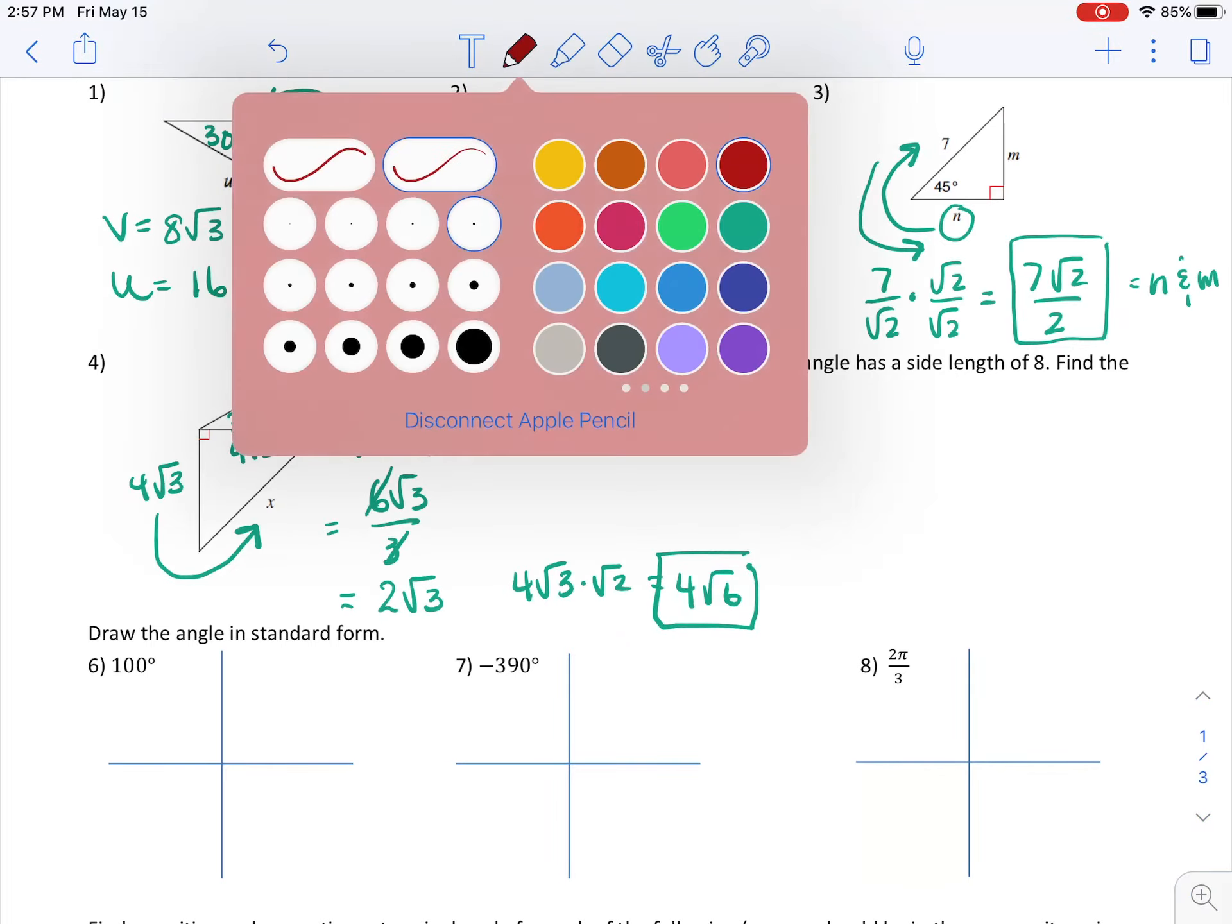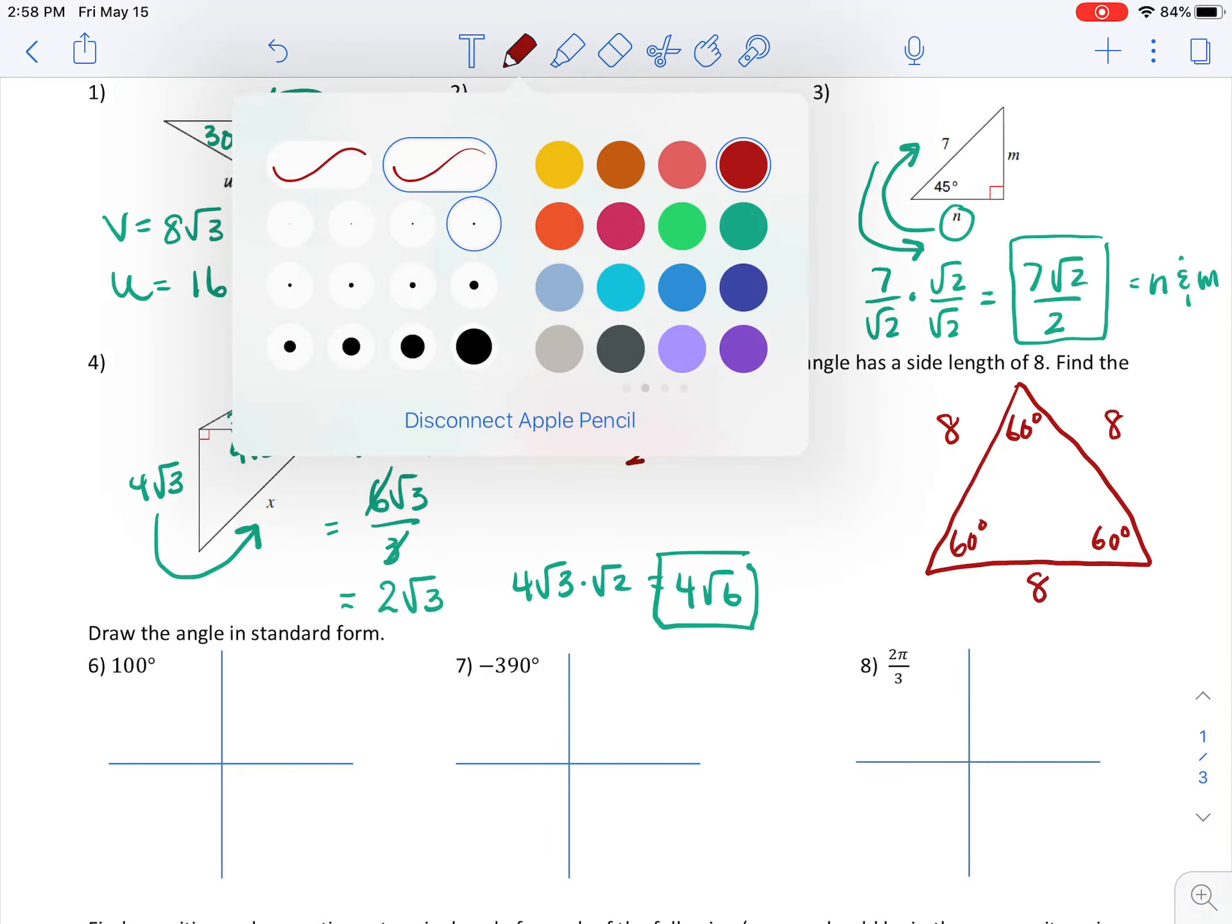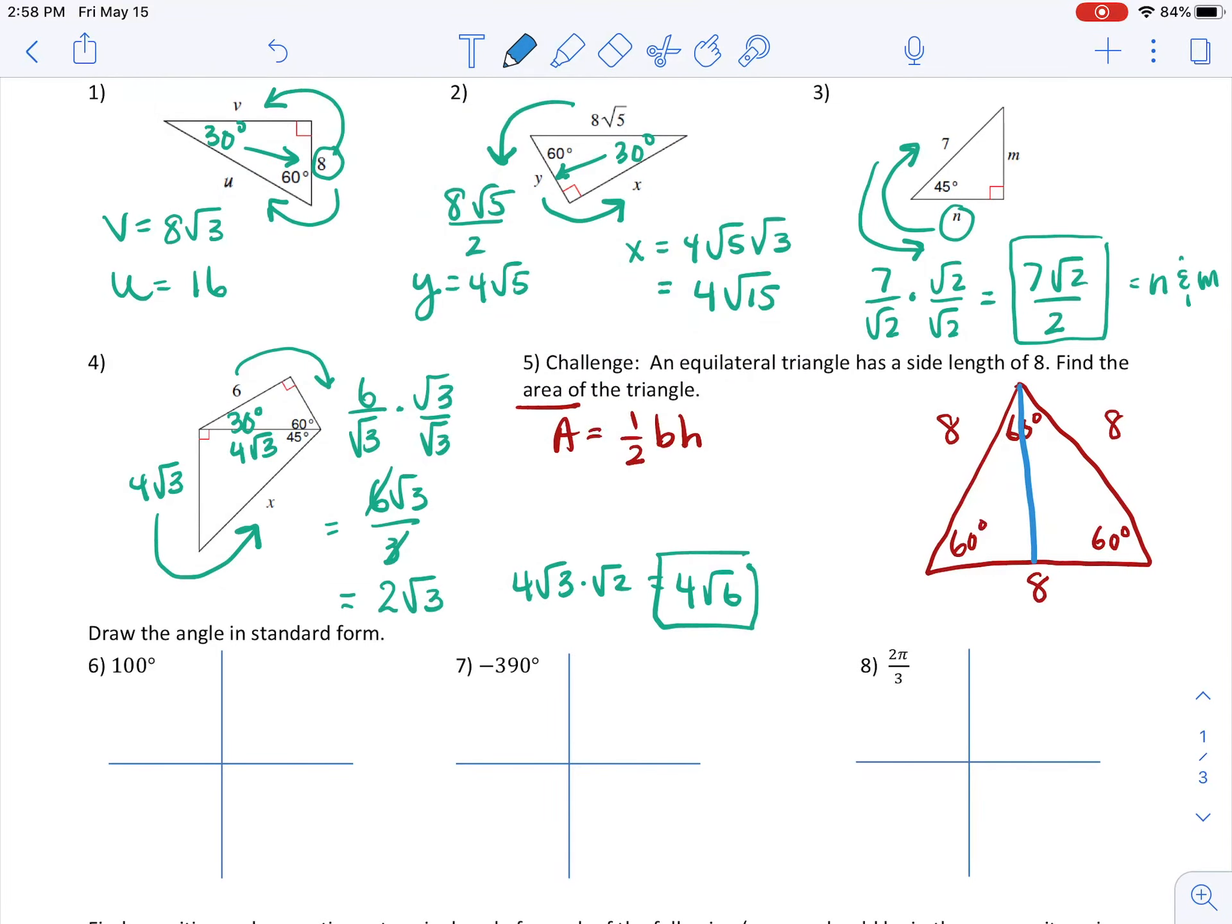This problem I threw into this review just for fun. An equilateral triangle has a side length of 8, find the area of the triangle. So let's draw a picture of an equilateral triangle. Equilateral means all the sides are the same. Now what we need to know is that if it's equilateral, it's also equiangular and all the angles are 60 degrees. So that's a hint about what's going on. Also, if I'm asked to find the area, I need to know the height because area of a triangle is one half base times height. So let me draw in a perpendicular line to the base there - that will be our height.